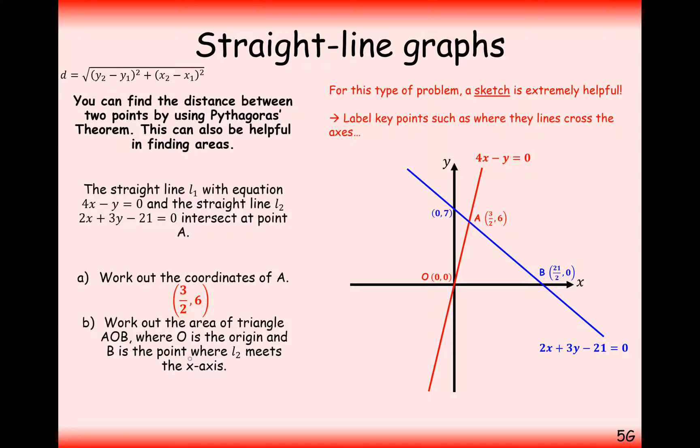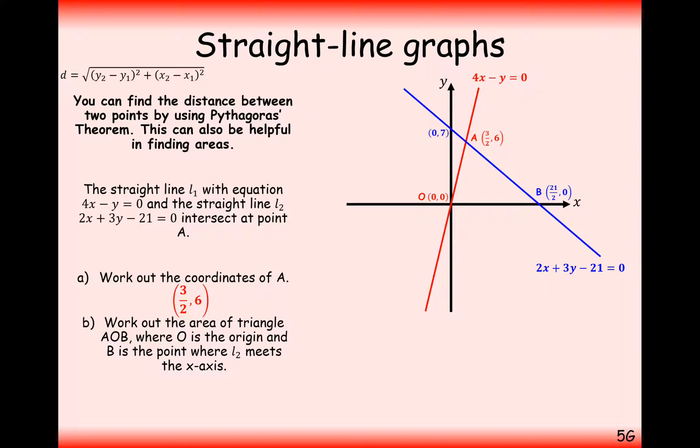So b is where the point L2 meets the x-axis. So that's how we found this 21, 2, 0 coordinate here. And now we just need to find the area of this. So what we can do then is perpendicular height times base. So the height of this graph here is going to be 6. That's effectively the y coordinate. The base of this coordinate is 21 over 2. So 21 over 2 times 6. And remember, it's half a b sine c. So half times base times height. So divide it through by 2 and you get 31.5.